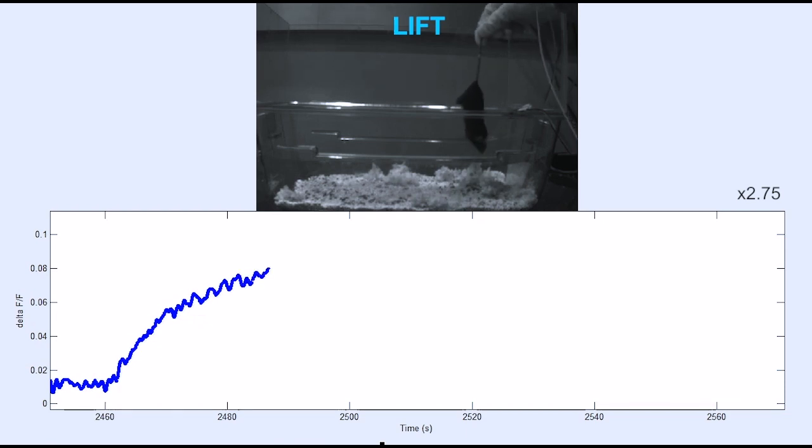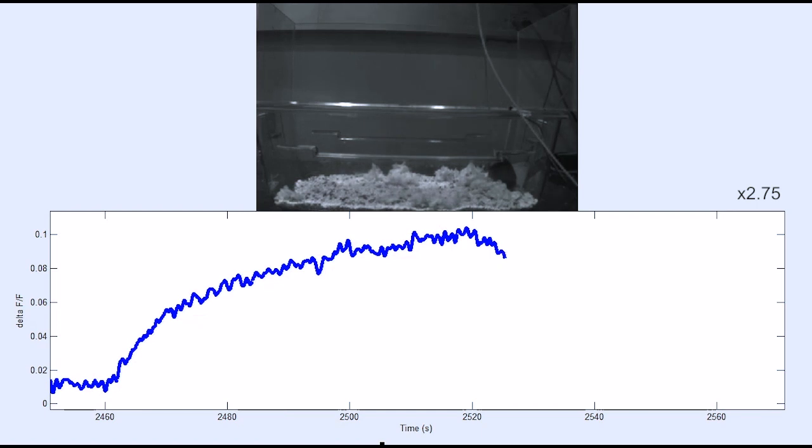You can observe here that during the tail suspension test, in which the animal is lifted by the tail into the air, which is very stressful, we see robust increases in fluorescence signal. We also observe fluorescence signal increases during a forced swim test, but not when the mouse is in contact with peanut butter, which is rewarding.